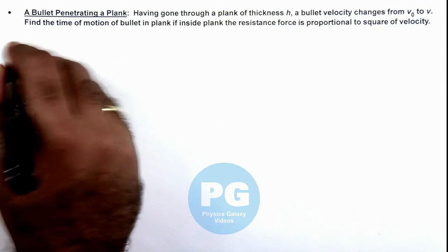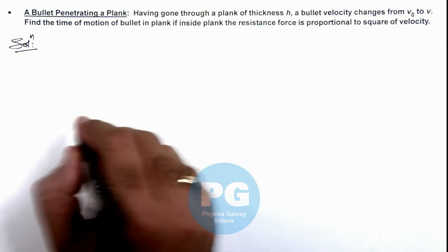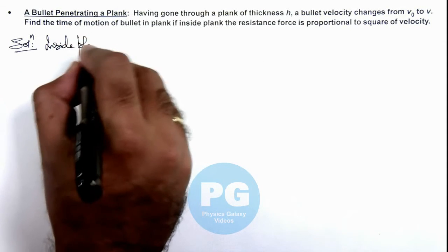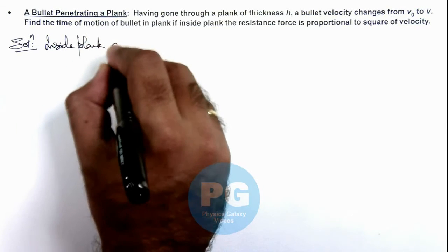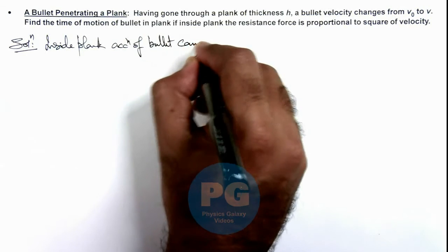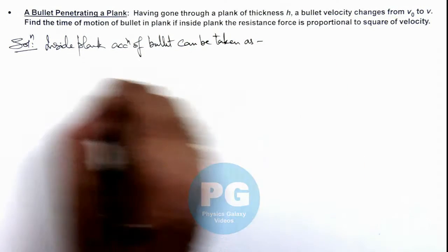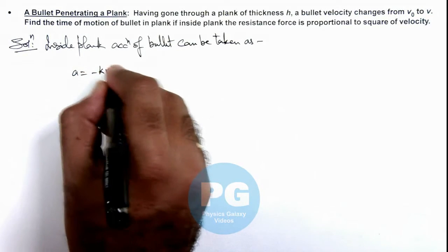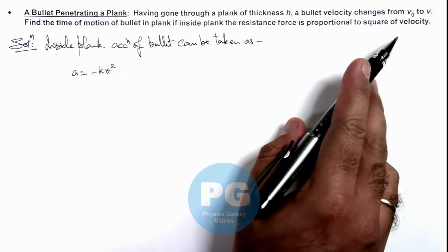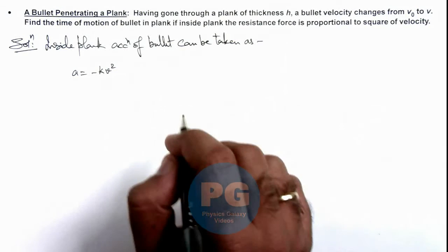We can write resistance force is proportional to square of velocity inside plank. Acceleration of bullet can be taken as a = -kv², as resistance force is proportional to square of velocity. Acceleration will also be proportional to square of velocity as bullet mass is not changing during motion.